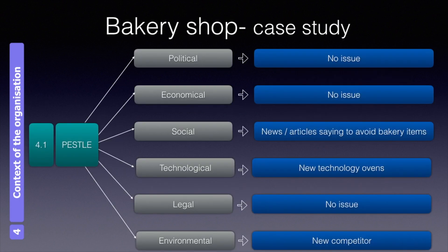Next, the owners performed a PESTLE analysis. For political issues, they assessed whether changes due to elections or new laws affect their business and QMS. Economical issues such as currency changes and recession did not significantly affect their QMS. For social issues, changes in religious beliefs didn't affect them, but changes in eating habits did — they read a newspaper article saying bakery items cause weight gain, and they found a resulting decline in sales.